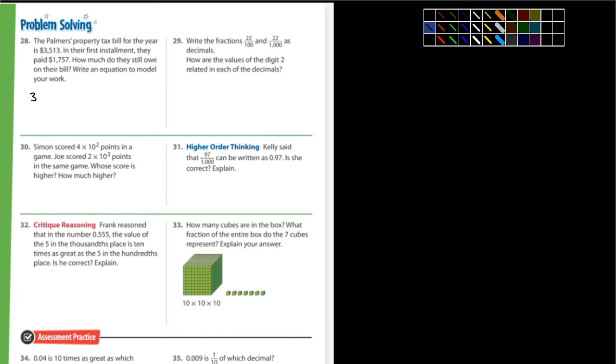Well, an equation is something with an equal sign. So, it's going to be 3,513 subtracting 1,757. And that's going to equal something. I'll let you figure that one out. That's going to be how much they have left. And I know it's an equation because I have an equal sign.